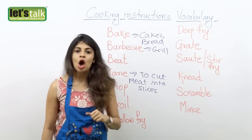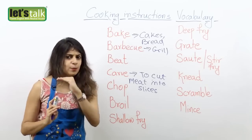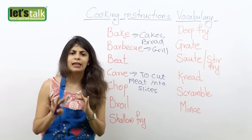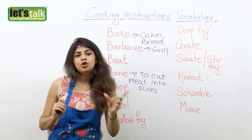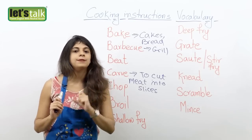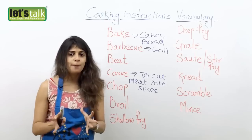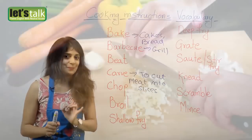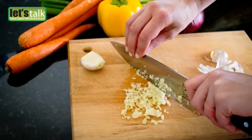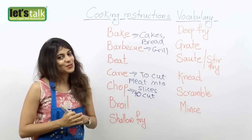Another one is chop. Now chop — you might have read this when you go online to get a recipe. You will always see chopped vegetables or chopped onions. So what exactly does it mean? Well, chop means to cut your veggies into small pieces.